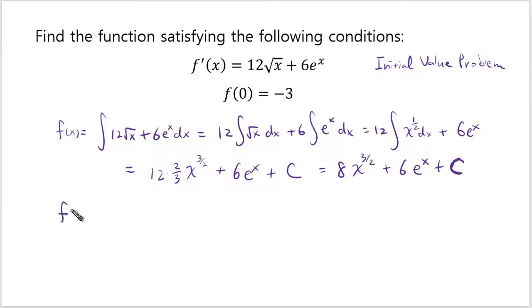So let's think about what f of 0 should be if fx is this function. So f of 0 according to what we just figured out should be 8 times 0 to 3 over 2 plus 6 times e to the 0th power plus c. Let's simplify. 0 to a positive power is just 0. So the first one is 0. e to 0th power that's 1. So 6 times 1. And then plus c. So that's what you get. You get 6 plus c.